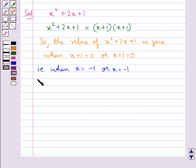Therefore, we say that the zeros of the polynomial x squared plus 2x plus 1 are minus 1 and minus 1.